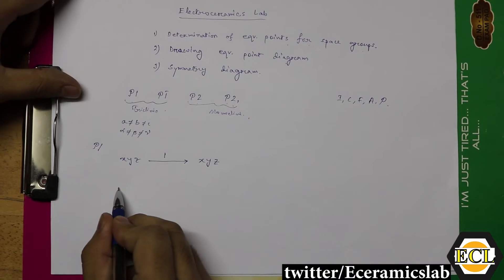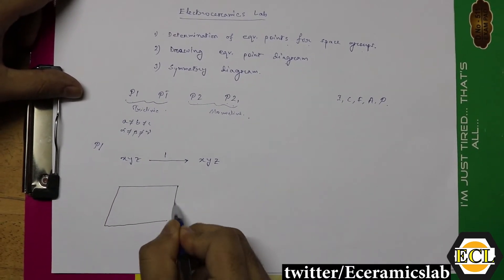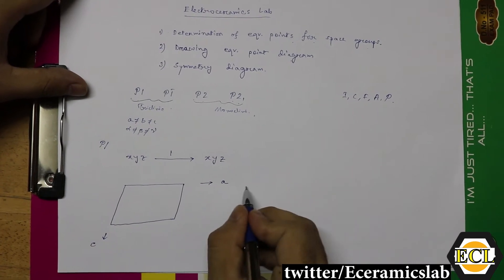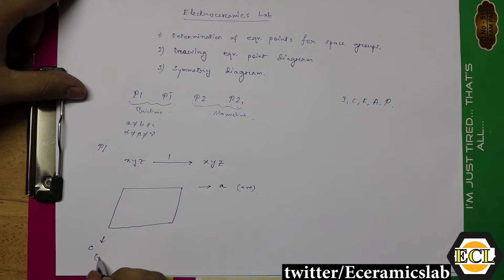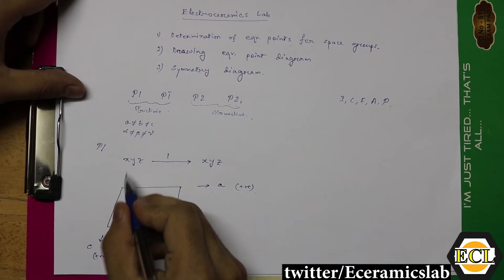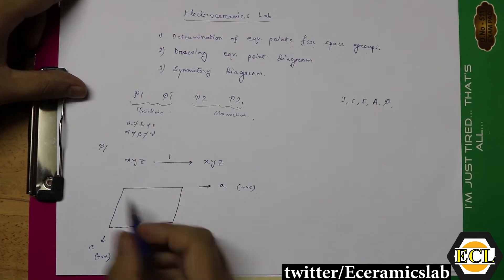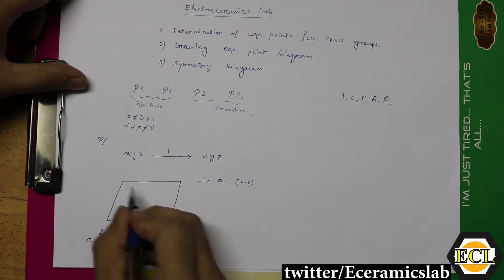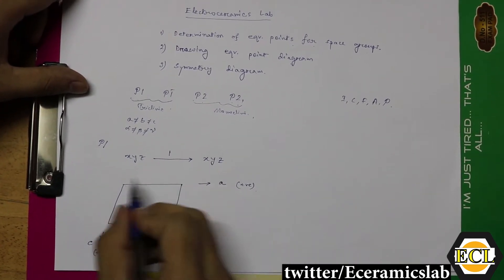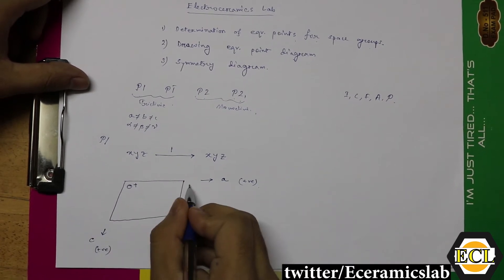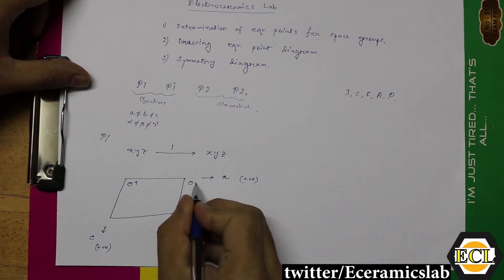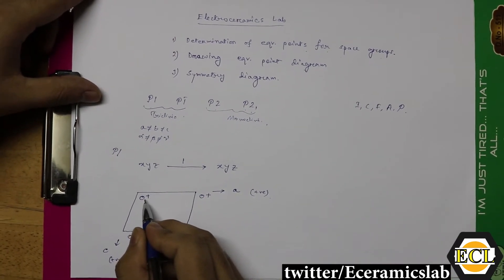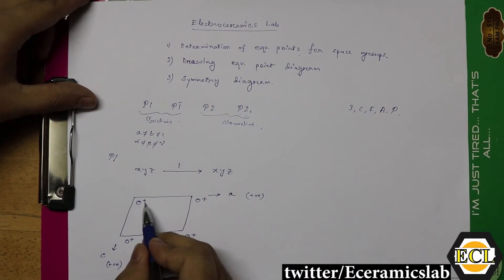To draw the equivalent point diagram, we consider this axis as A and this one as C. This is the positive direction of the A axis, this is the positive direction of the C axis, and this is the negative direction of the C axis. Above the plane is the positive direction of the B axis. The position of XYZ in this unit cell will be marked here.